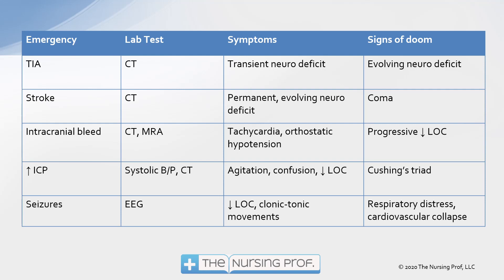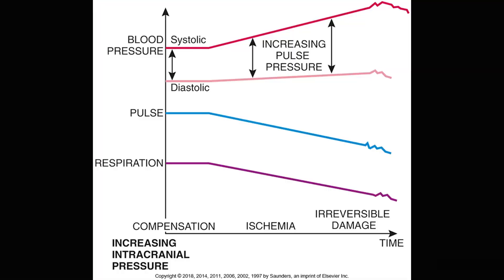Lastly, for seizures on the comparison chart, the lab test is the EEG. Symptoms include decreased level of consciousness, clonic-tonic movements, respiratory distress, and cardiovascular collapse — which can occur even into the postictal phase. Cushing's triad shows the systolic blood pressure going up with an increase in pulse pressure, while bradycardia and decreasing respiratory rate occur simultaneously. As intracranial pressure rises, pulse and respiration go down while blood pressure goes up.